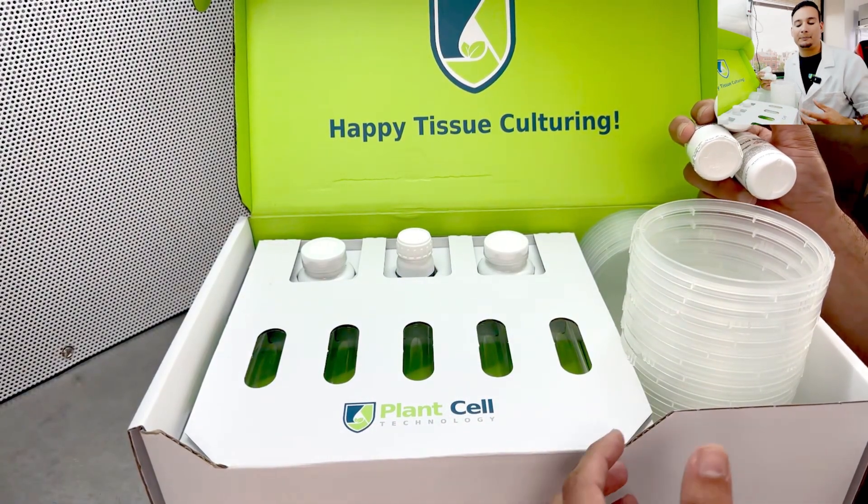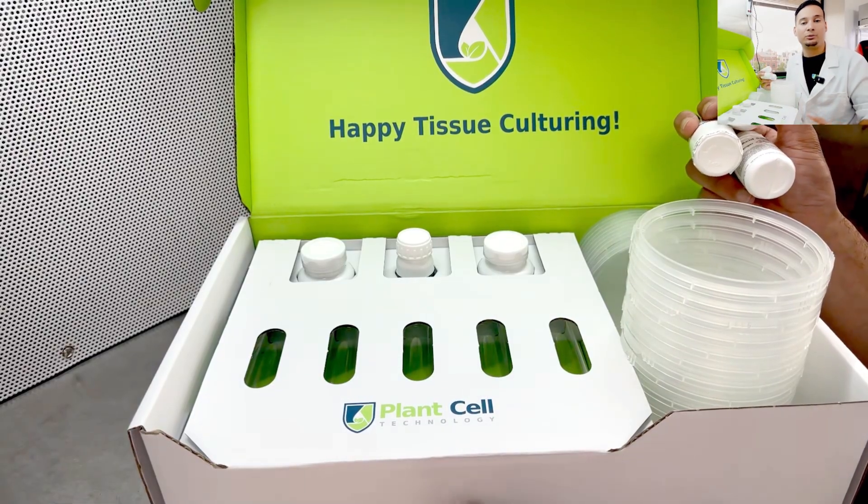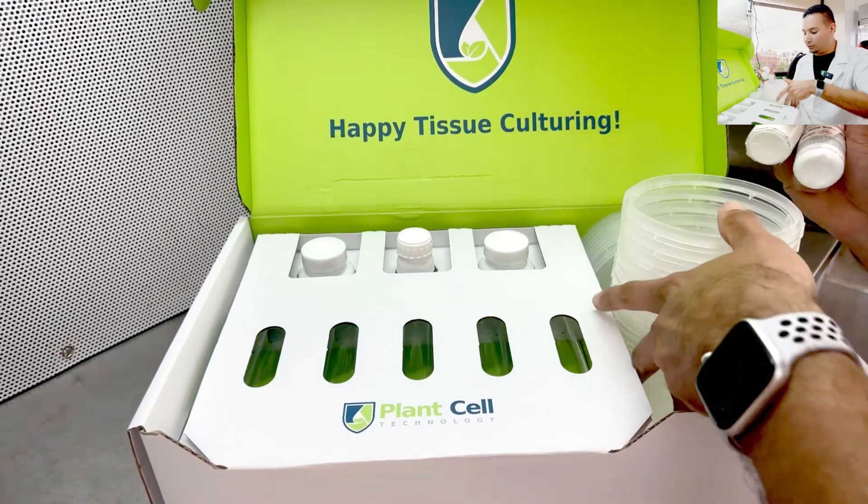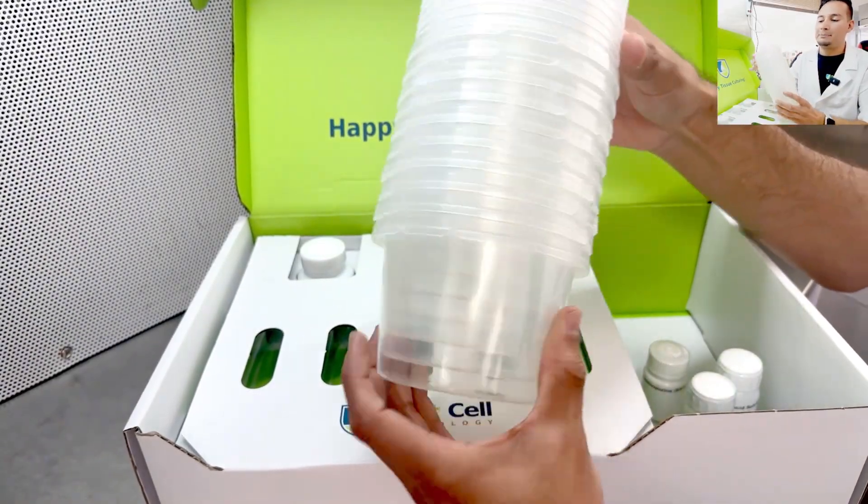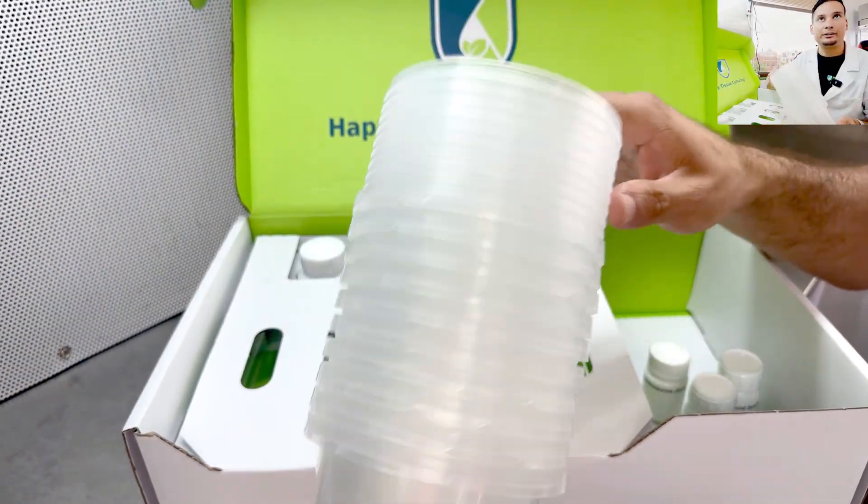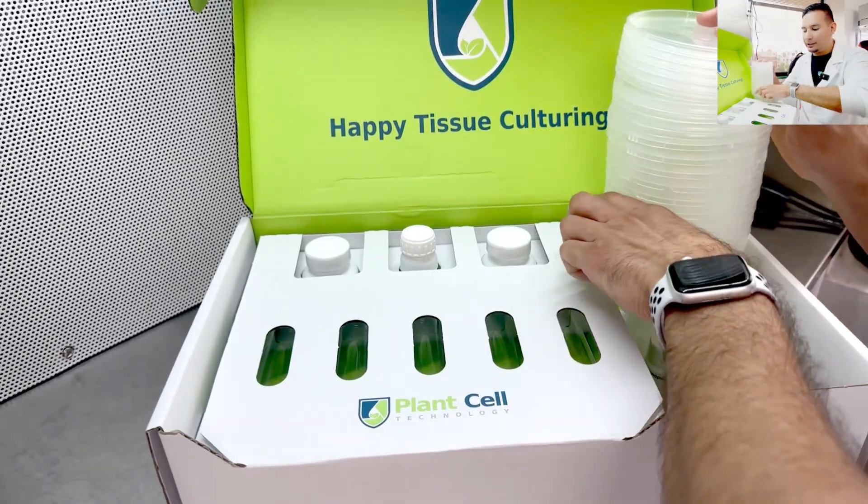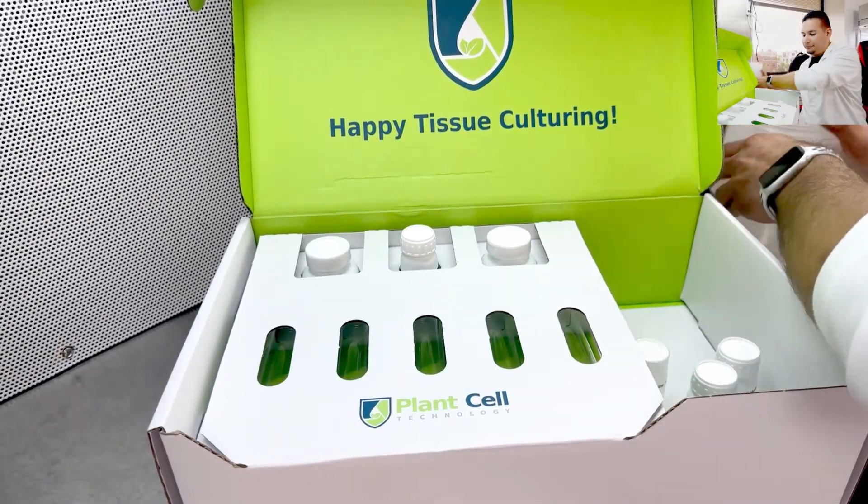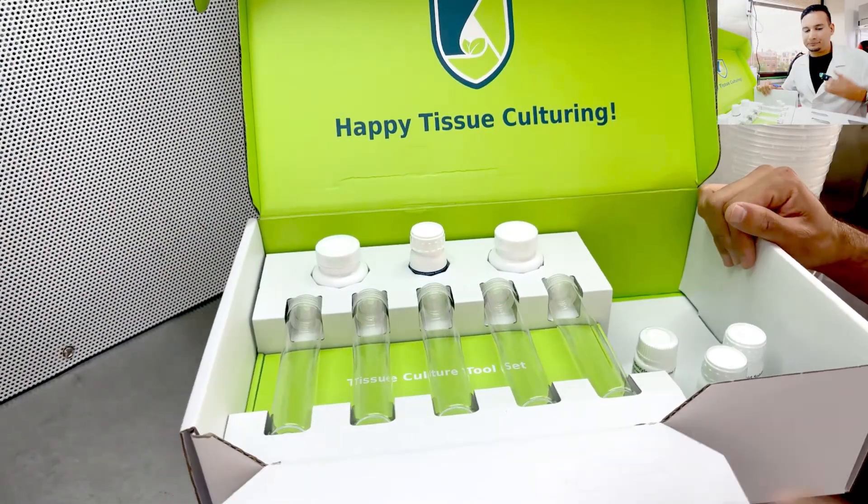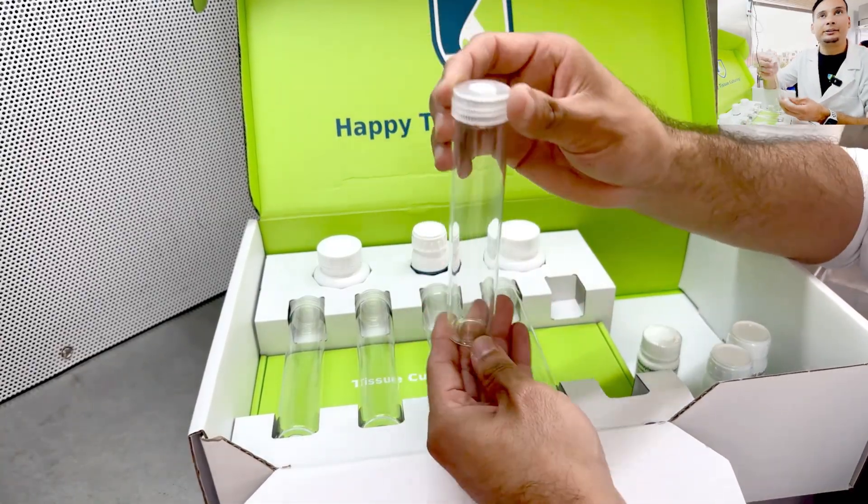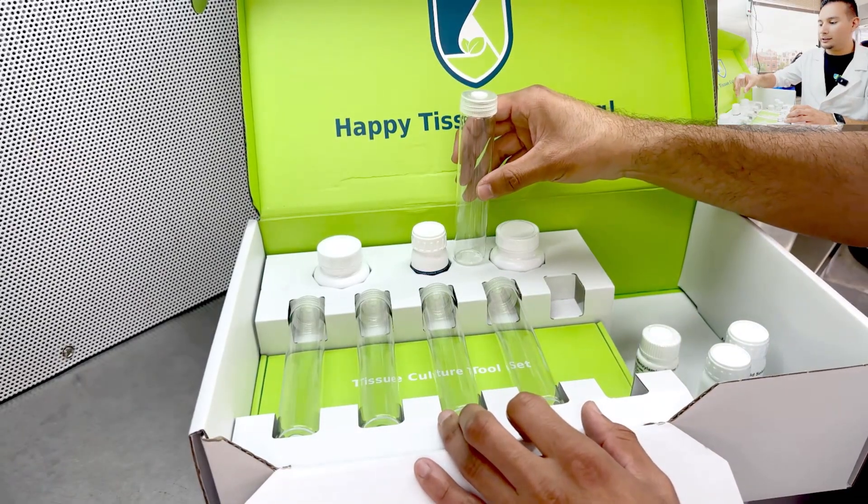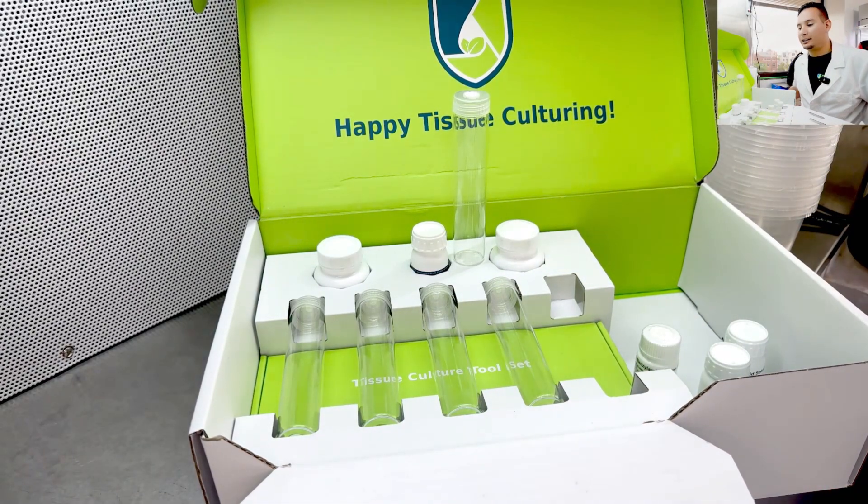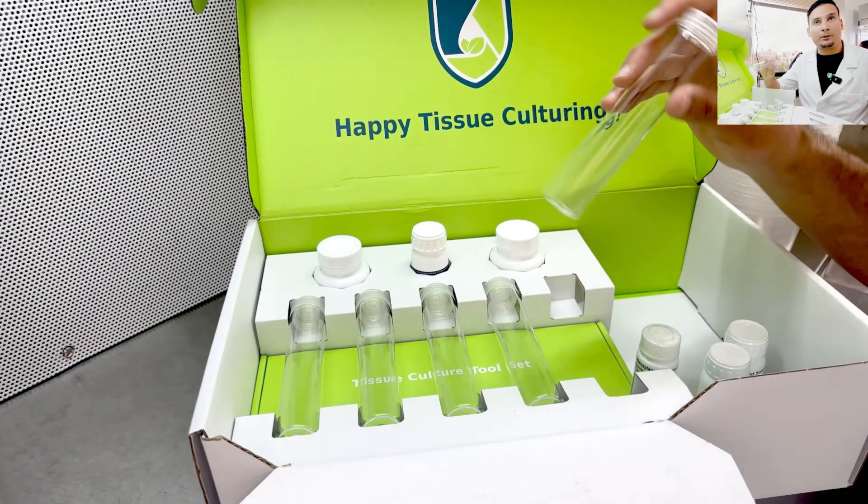It doesn't matter if you're multiplying or trying to root your plants. Also in the kit, we have 10 snap-lock containers, non-vented. We also have five glass-vented test tubes with a flat bottom, so you can stand it by itself. You don't need a rack to keep them from falling over.